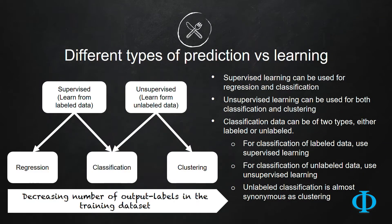This slide shows the relationship between different types of predictions and different types of learning mechanisms — that is, what type of learning mechanism you can use for what type of prediction. As you can see in the figure on the left-hand side of the slide, supervised learning can be used for both regression and classification type of problems.